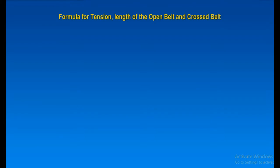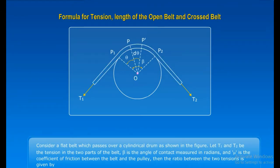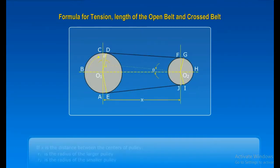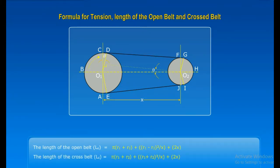Let us discuss the formula for tension length of the open belt and crossed belt. Consider a flat belt which passes over a cylindrical drum as shown in the figure. Let T1 and T2 be the tension in the two parts of the belt, B is the angle of contact measured in radians, and mu is the coefficient of friction between the belt and the pulley. Then the ratio between the two tensions is given by. If X is the distance between the centers of the pulley, R1 is the radius of the larger pulley, R2 is the radius of the smaller pulley, then the length of the open belt is, then the length of the cross belt is.